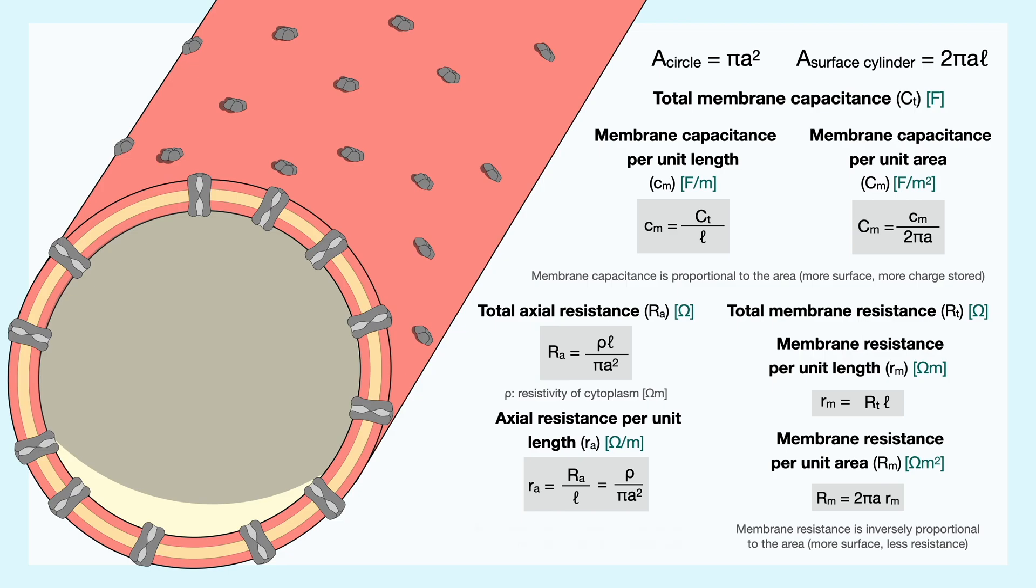Here again, we can find the axial resistance per unit length by dividing the total resistance by the length, which leaves us with this expression. Just like the membrane resistance, the axial resistance is inversely proportional to the size of the cylinder. Indeed, if the cylinder is smaller, the area for the charges to flow becomes more constricted and thus makes the flow of charges harder.